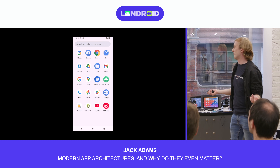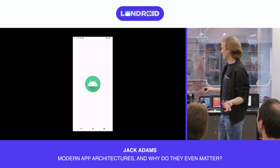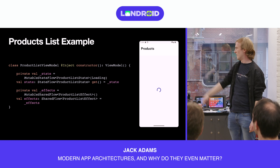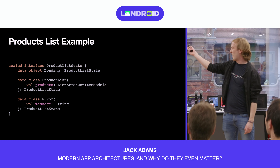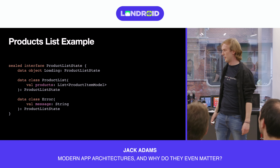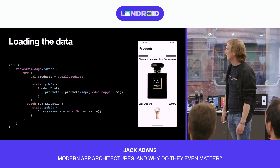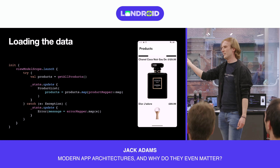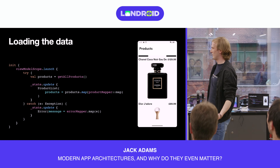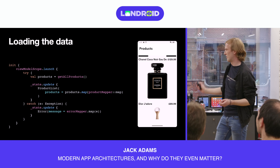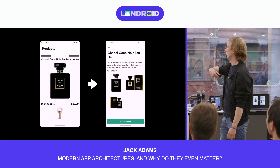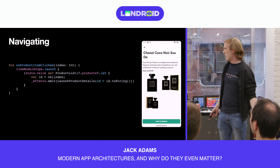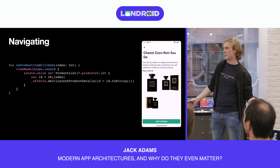The first feature of our app is to load the data. We have a loading view and our products. We're going to have our state and our effects. Our states look like this: loading, error, and the product list when it's loaded. In our init, we're going to call our use case to get all the products, reduce the state, and if there's an error, catch it and show the error state. For navigation, we just add a method, access our state to get the ID, and release an effect.